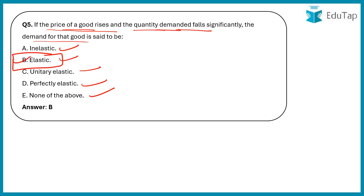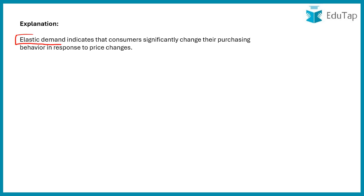Elastic demand means consumers significantly change their purchasing behavior in response to price changes. For example, if a consumer liked a product but its price rose, their demand for it falls — this is elastic demand. In the comment box, please write what inelastic demand means, as the next concept to explore.